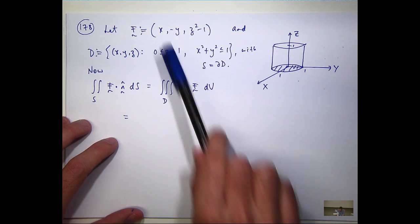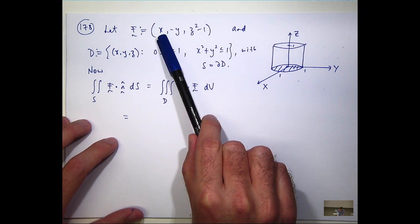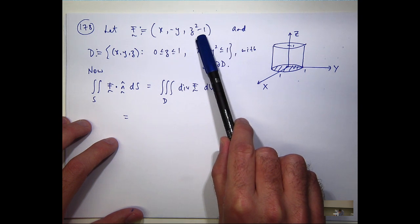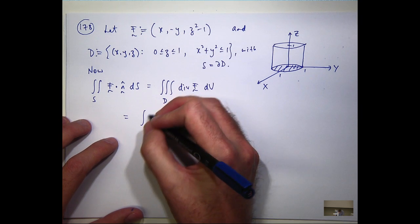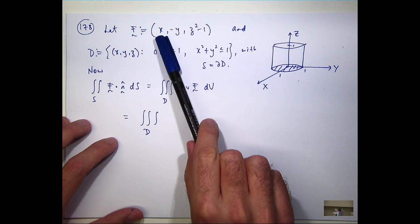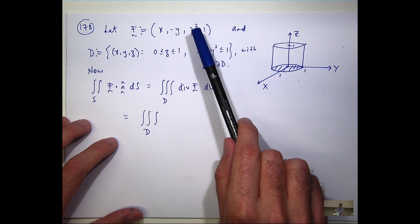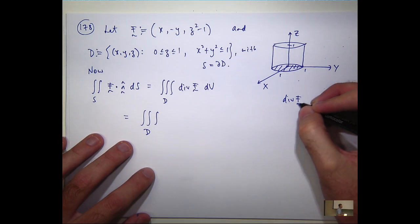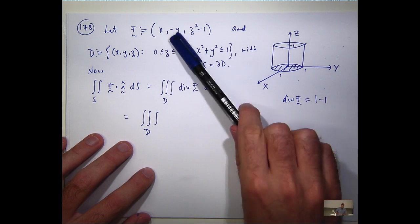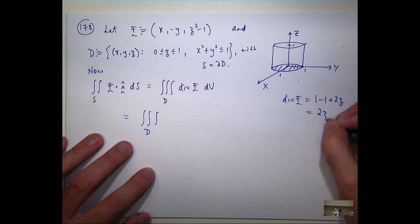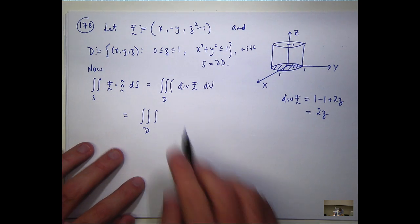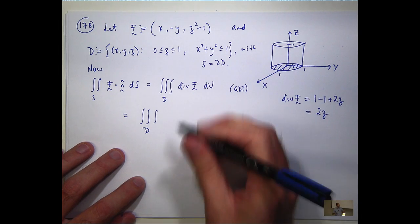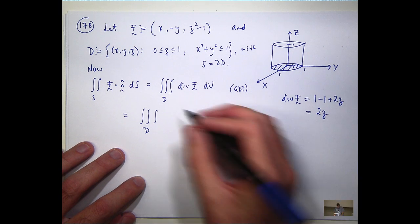So remember the divergence is just, let's take the first component, differentiate with respect to x. Take the second component, differentiate with respect to y. Take the third component, differentiate with respect to z, and just add them all together. So the divergence will just be 1, minus 1, 2z, all added together. So I get 1 from there, I get minus 1 from the next one, and I get this. So it's just 2z. So here I'm applying Gauss's divergence theorem.